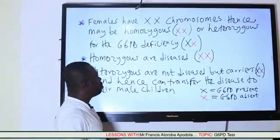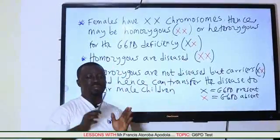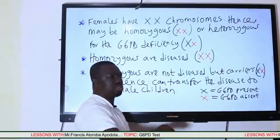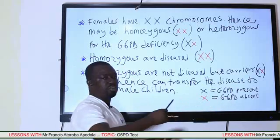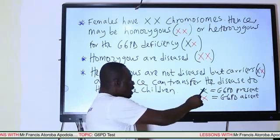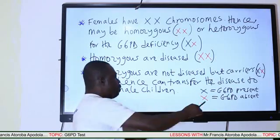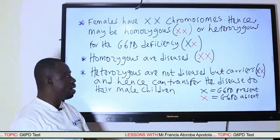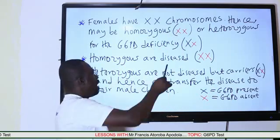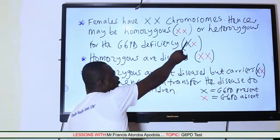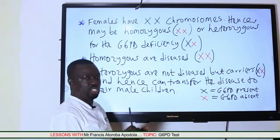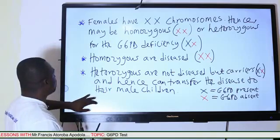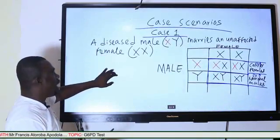Notice that a red letter X is used to symbolize the absence of the G6PD enzyme, while the black letter X symbolizes the presence of the G6PD enzyme. So homozygous abnormal — two red X's — represents the disease, and heterozygous — one red and one black X — represents a carrier female. That is a brief overview of the genetics with respect to female subjects.